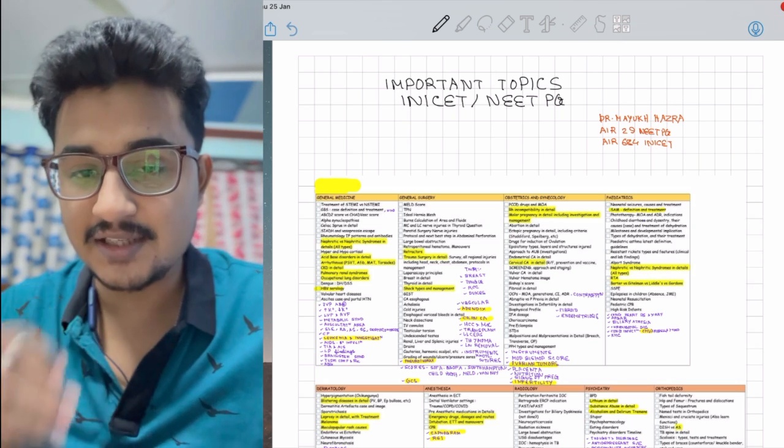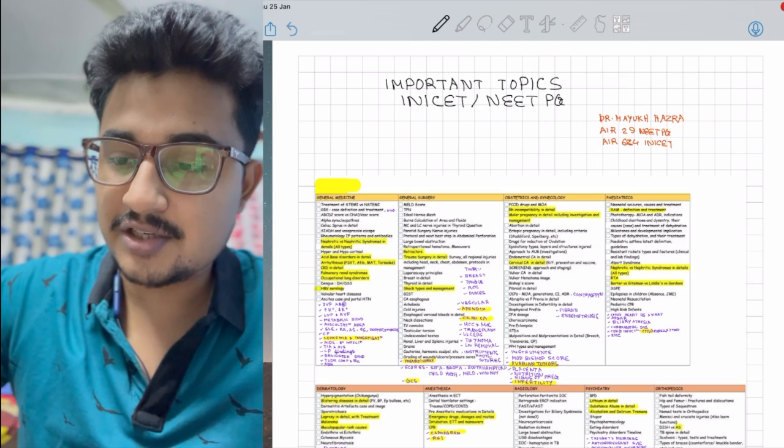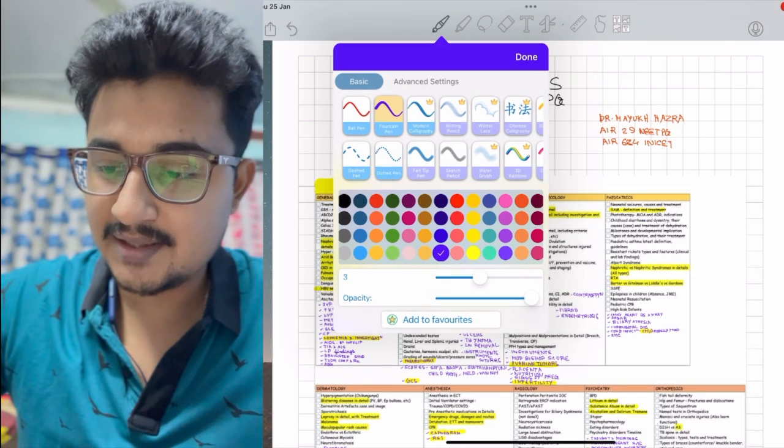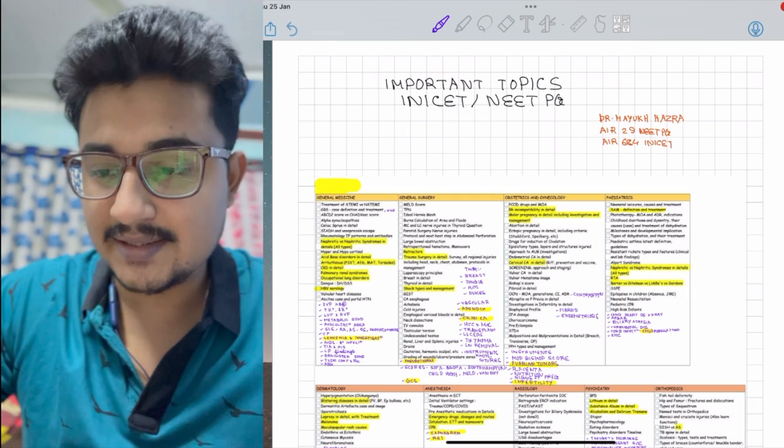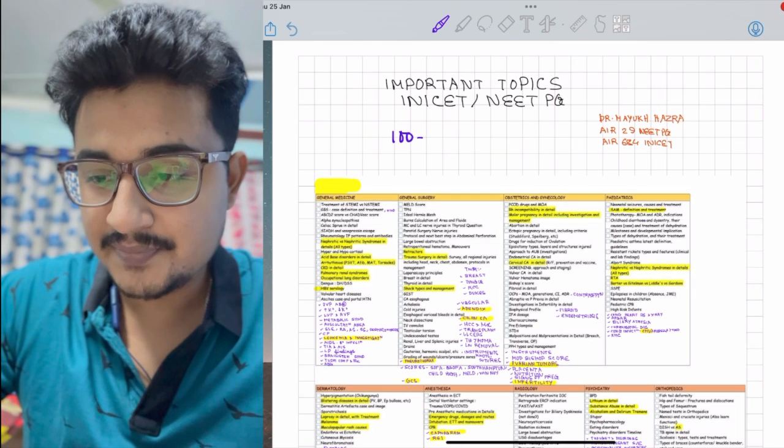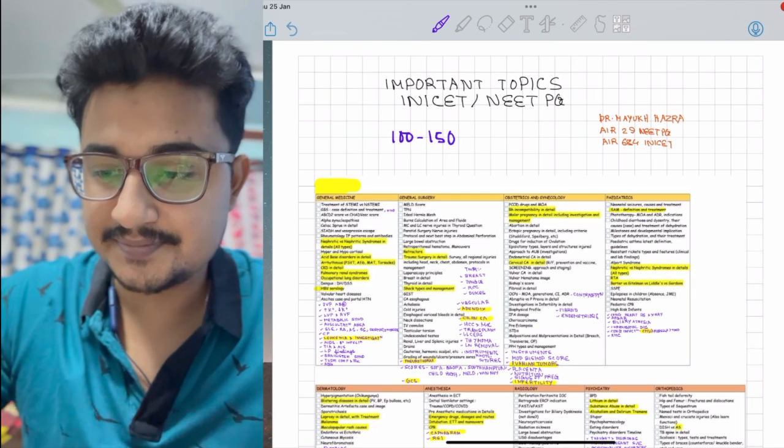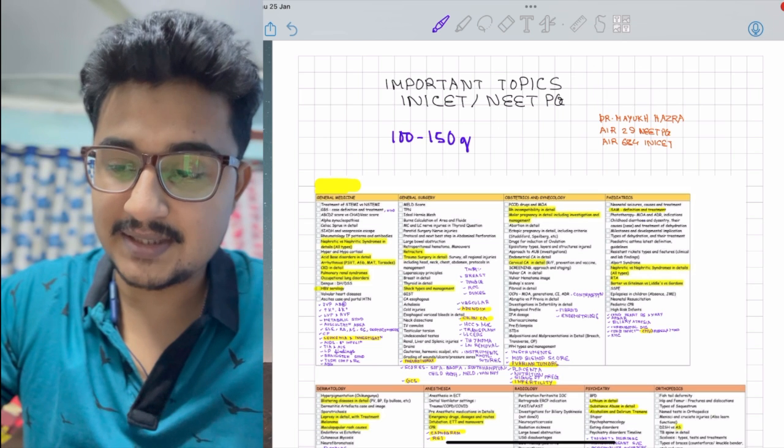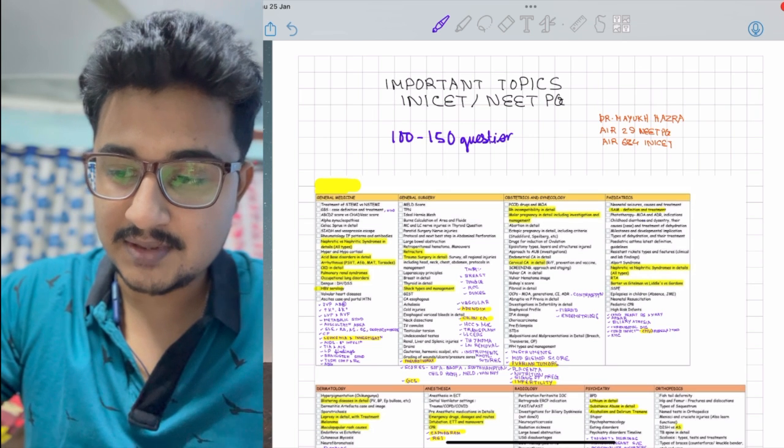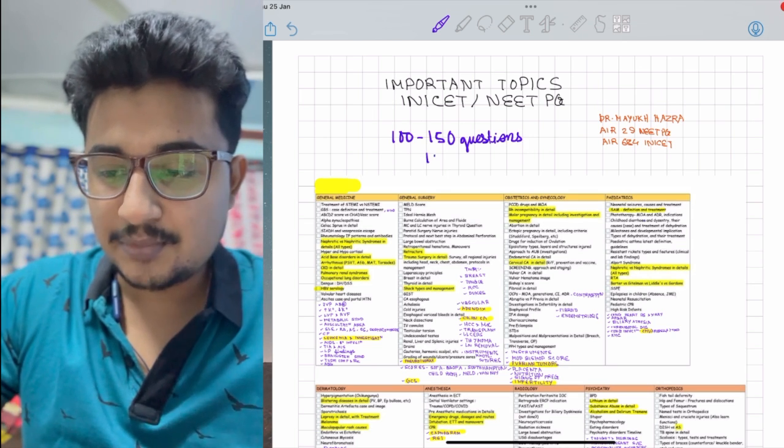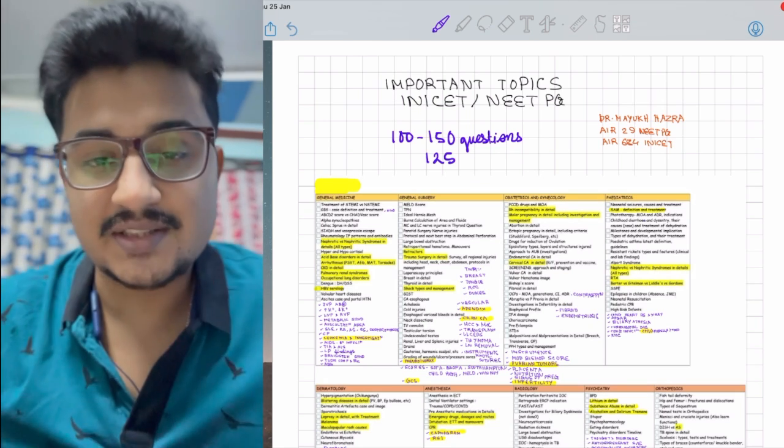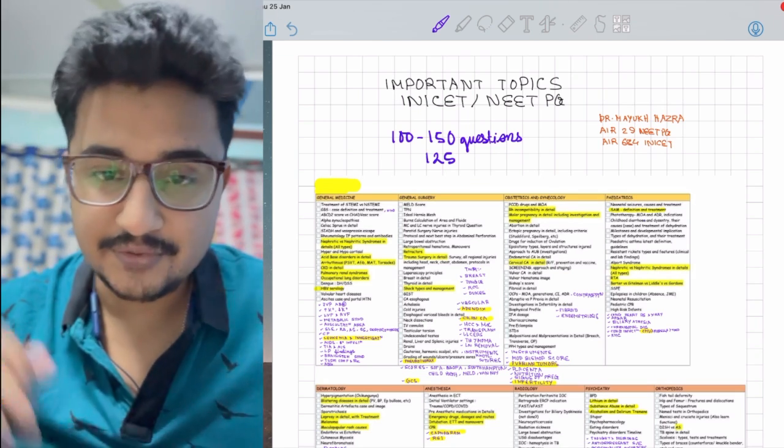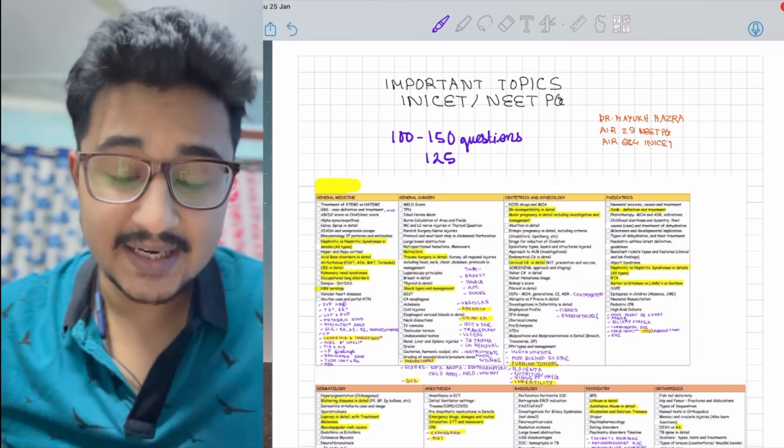I've tried to cover the most high-yield topics, and I can assure you that you can get at least 100 to 150 questions from this topic list.